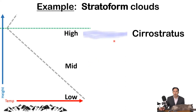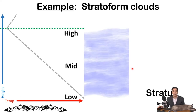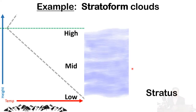For stratiform clouds, a thin layer at the top of the troposphere is cirrostratus. If it's thicker and extends down to the middle part of the troposphere, that's altostratus. And if it extends all the way down near the ground — it doesn't necessarily have to touch the ground, but if it's down pretty low — that's stratus.